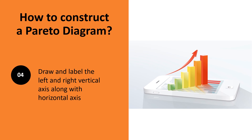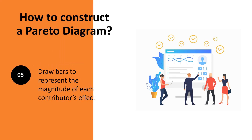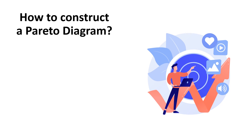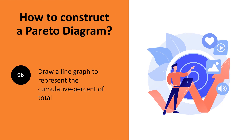Label the right axis from zero to 100%, lining up the total on the left axis with 100%. In step 5, draw bars to show the extent of each contributor's influence. The height of the bars represents the size of its contribution as measured along the left axis. In the sixth step, create a line graph to show the cumulative percentage of the total. The points correspond to the cumulative percentage measured on the right axis. Arrange the points above the right-hand edge of the bars. The first rank contributor's cumulative percentage point should equal the height of the first bar — if not, you have committed a mistake.